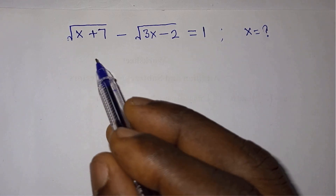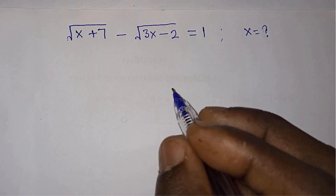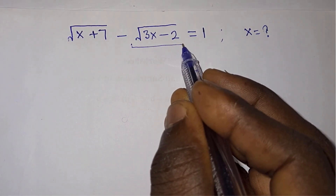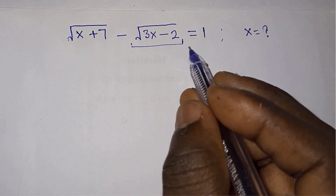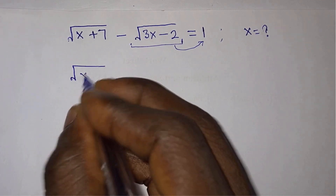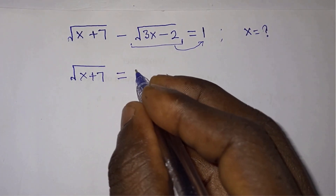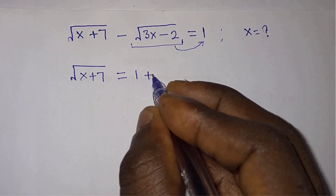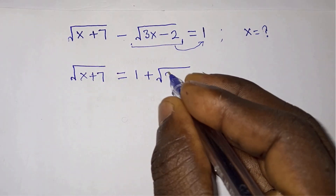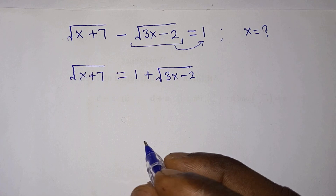Hello everyone. How to solve for x in this radical equation. Let's get started. First, let's move this negative square root of 3x minus 2 to the right hand side of the equation, so we will have square root of x plus 7 is equal to 1 plus square root of 3 times x minus 2.